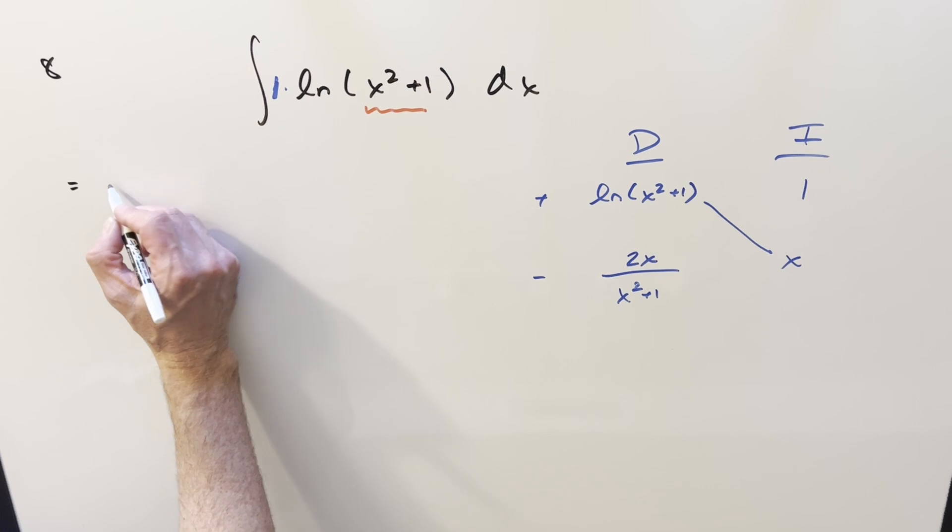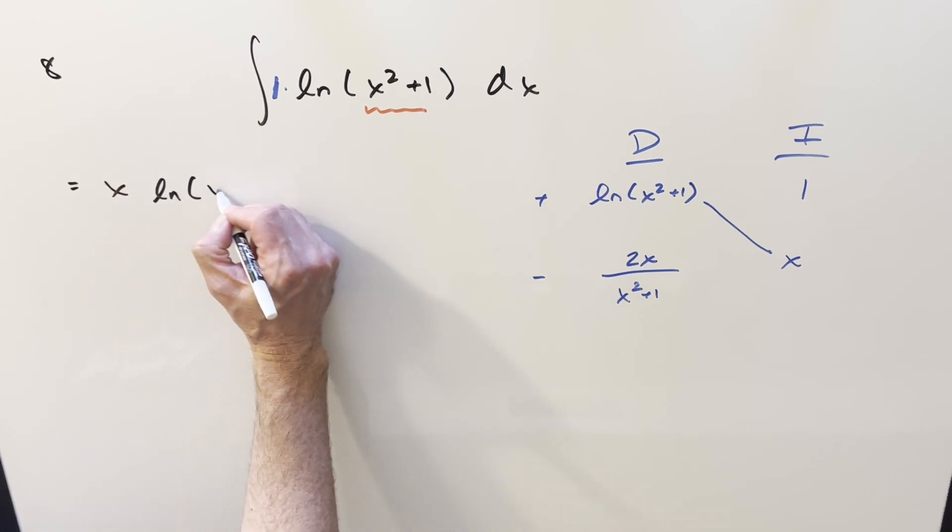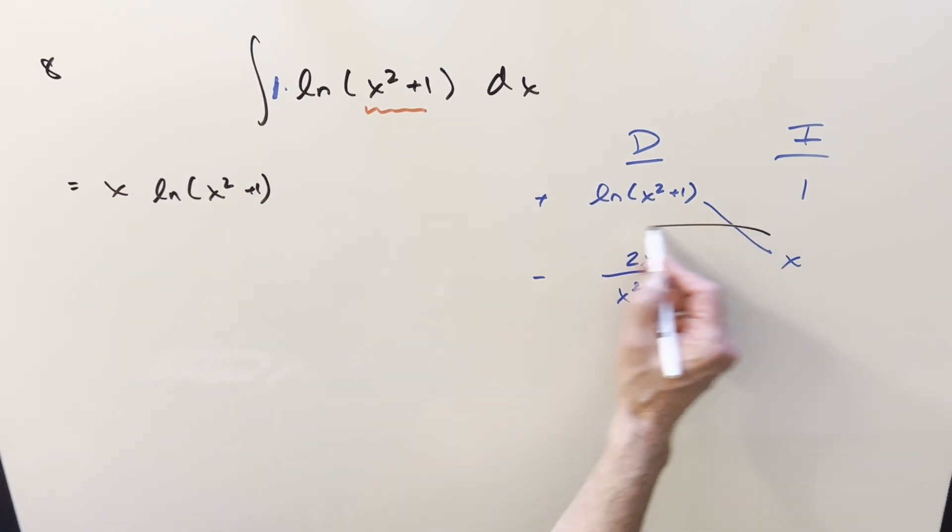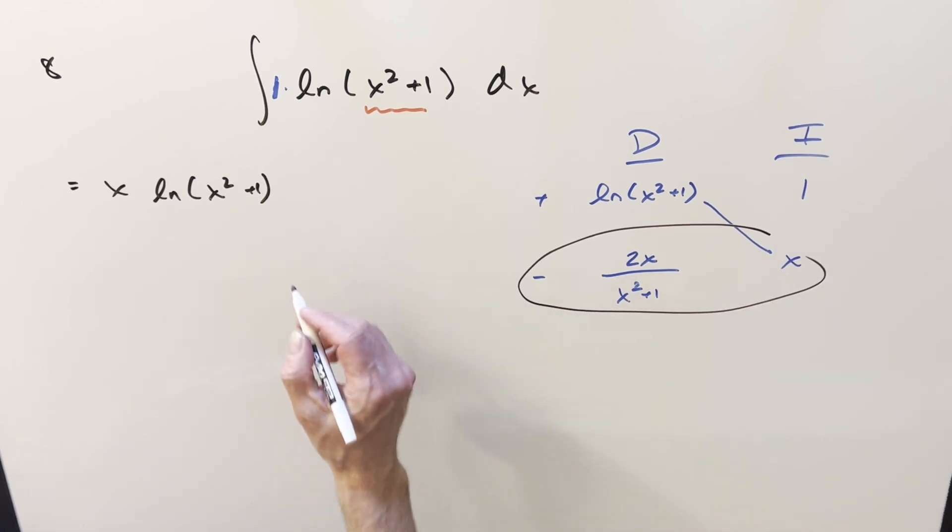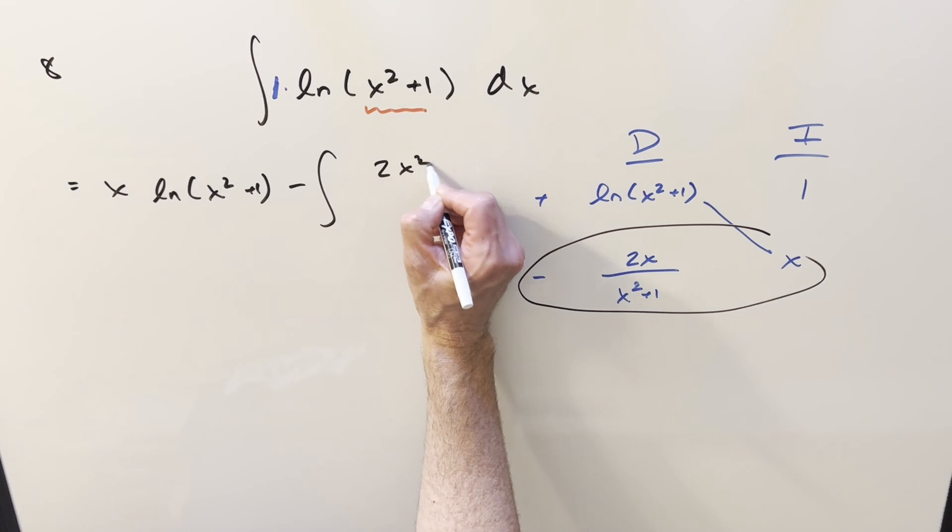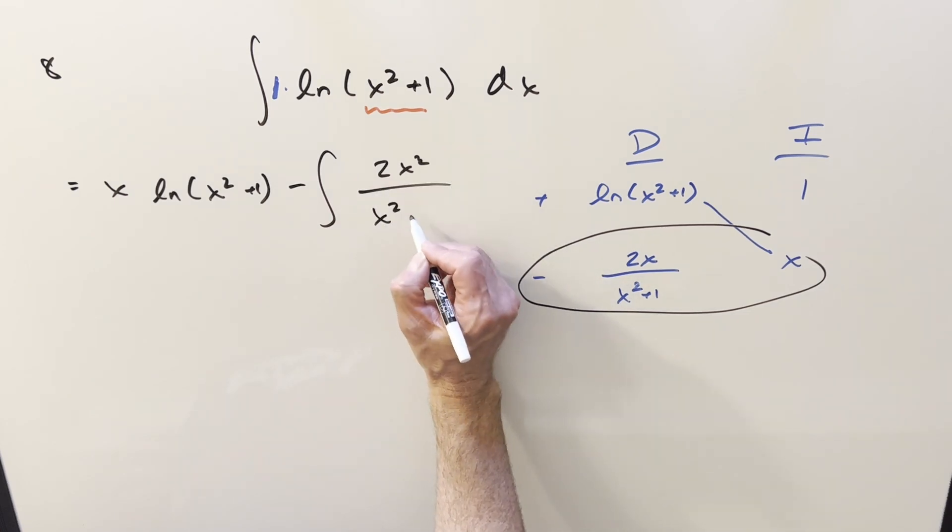So what we have is going to be just x natural log x squared plus 1. And then our integral, all this, with a minus sign. So what we're going to have is minus 2x times x, 2x squared over x squared plus 1.